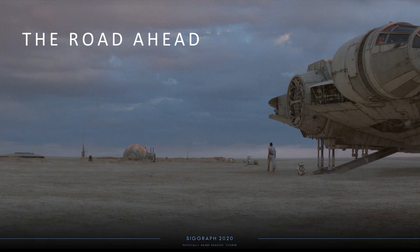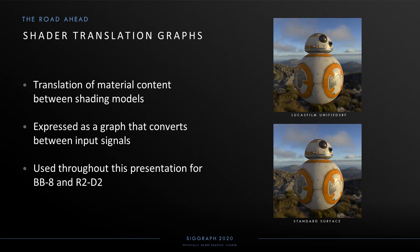In this section, we'll provide a few thoughts on the road ahead and discuss some current and upcoming projects. At Lucasfilm, one active area of research is the translation of material content between shading models, with that translation expressed as a MaterialX graph that converts signals between the expected inputs of the two BSDFs. This approach works together with texture baking, allowing translated material content to be converted to flat textures for efficient rendering. We've used this technique to translate BB-8 and R2-D2 from Lucasfilm's production shading model, UnifiedSurf, to the standard surface model for transport to external teams.